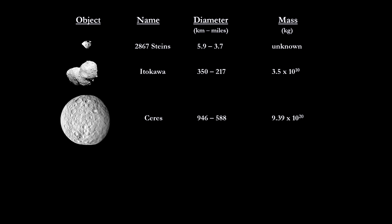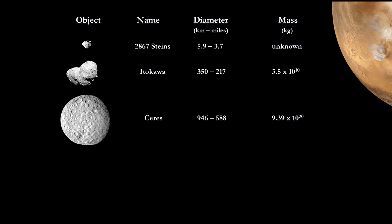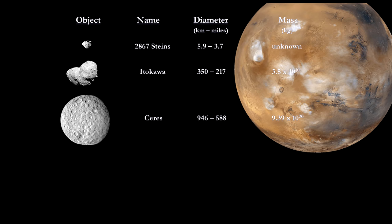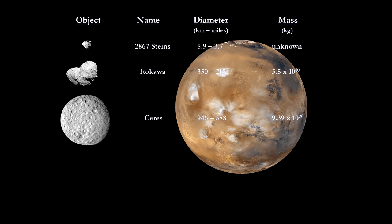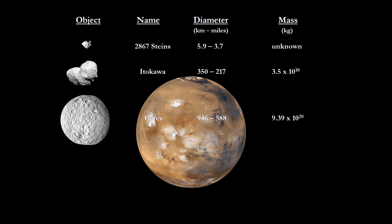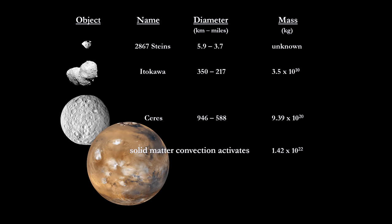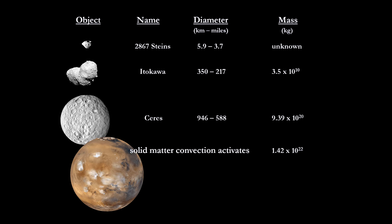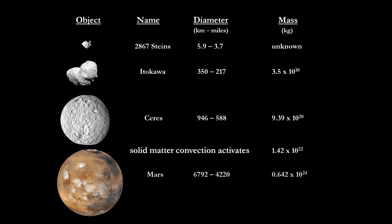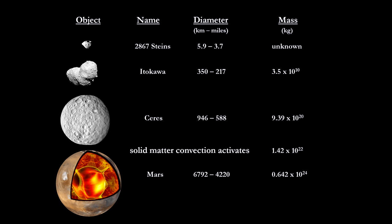While becoming spherical is perhaps the most obvious outward sign of increasing mass, the interior of the body begins to undergo geophysical transitions as the mass increases. One is the transition to bodies large enough to sustain convection in their interiors. Convection is the process by which less dense material rises and more dense material sinks. Solid matter convection activates somewhere around 14 million trillion metric tons.